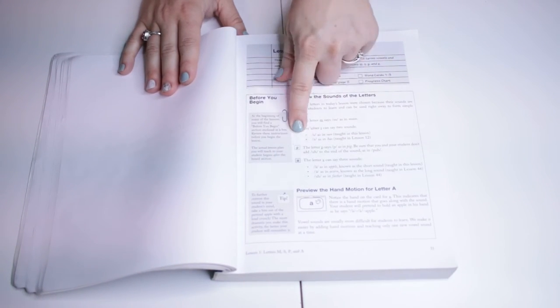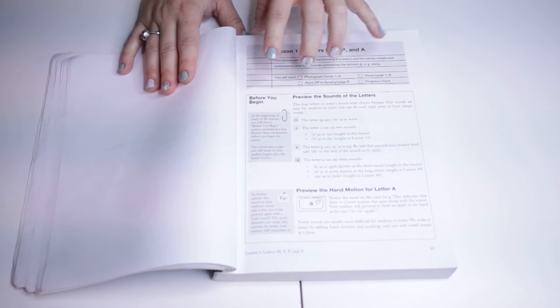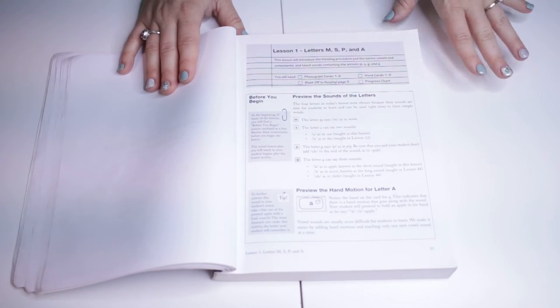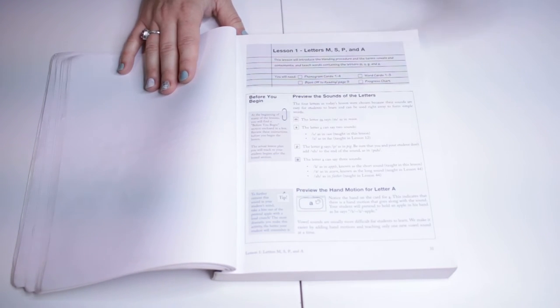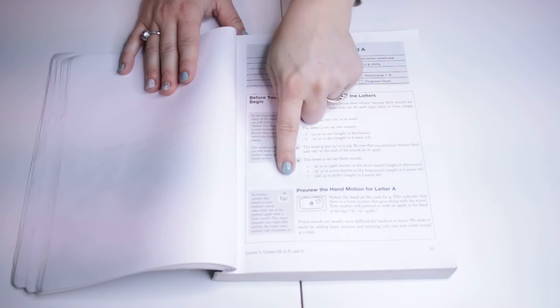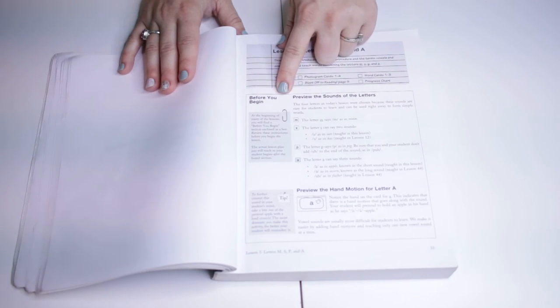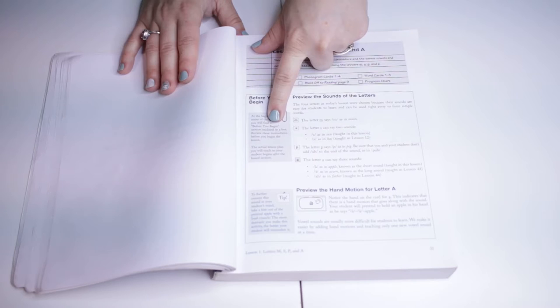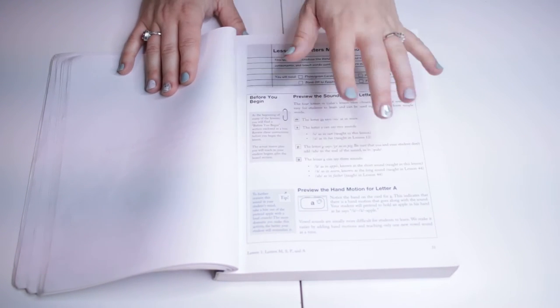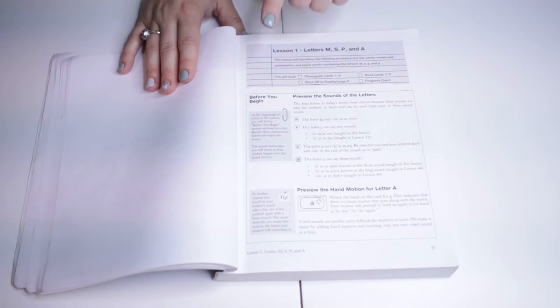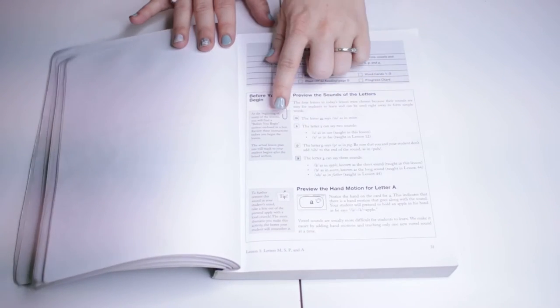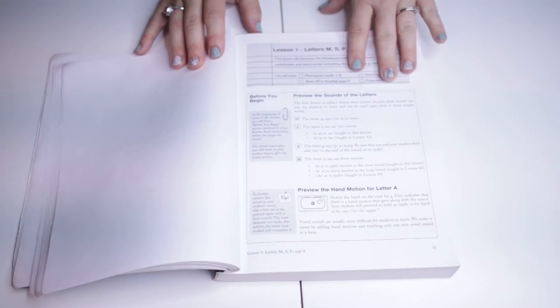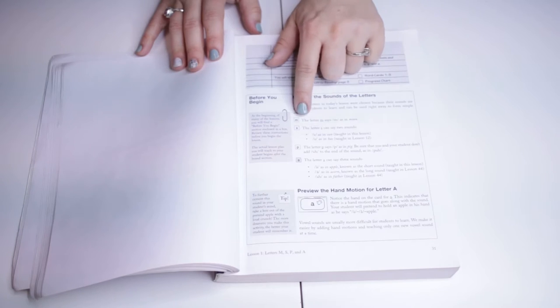So we would repeat that for the letter A. And you see here it says before you begin, you would want to read this little section before you even begin the lesson. So this is a program where you need to pull it out beforehand or the night before and make sure that you're staying up to date with the before you begin. Sometimes this section can be way bigger, it could be like a whole page. So keep in mind you need to read this before you start.